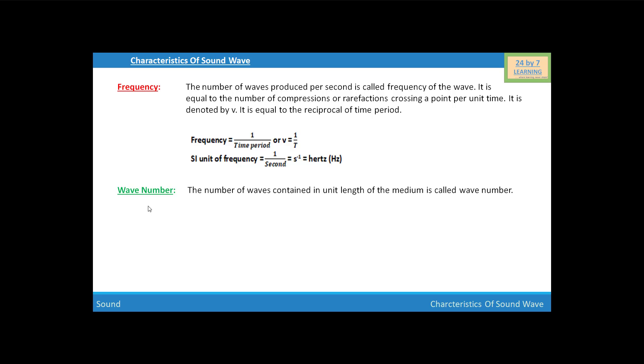Next quantity is wave number. The number of waves contained in unit length of the medium is called wave number. Wave number is given by one upon lambda. So students, these are the general quantities of the sound wave. Thank you.